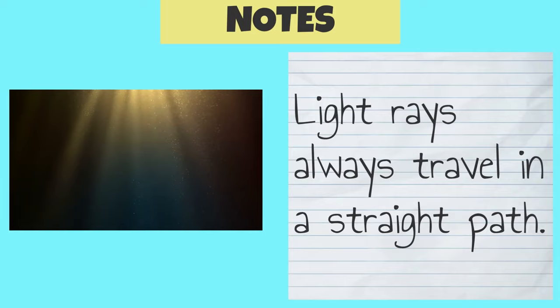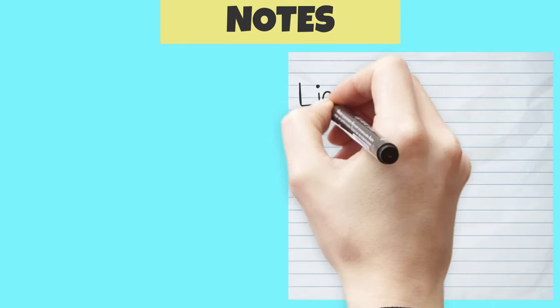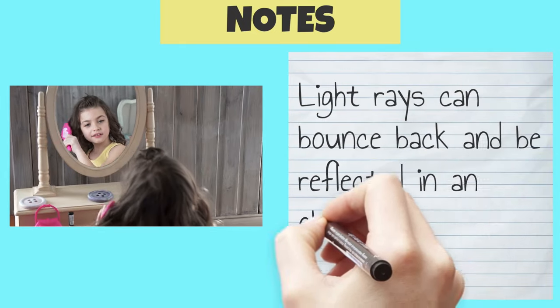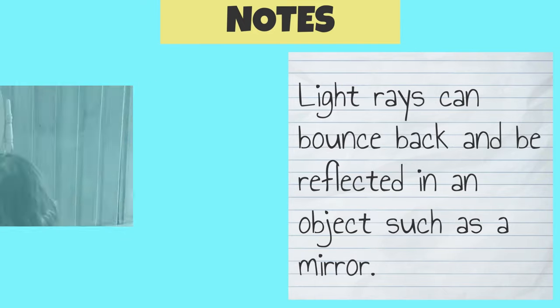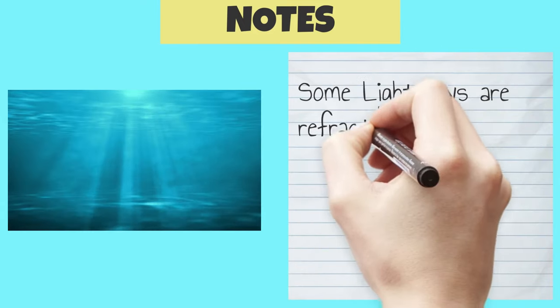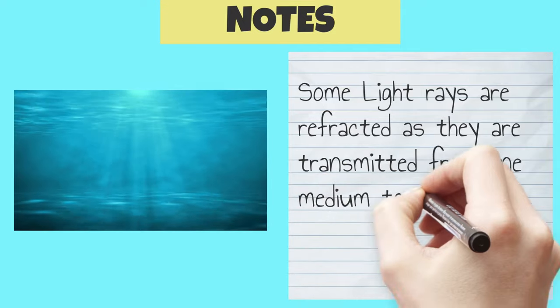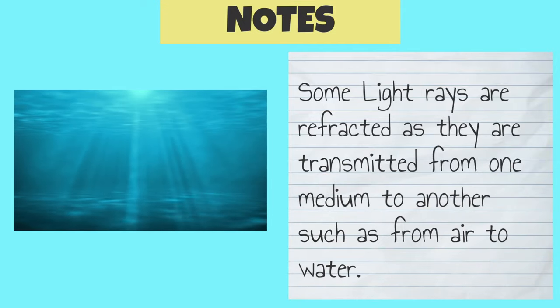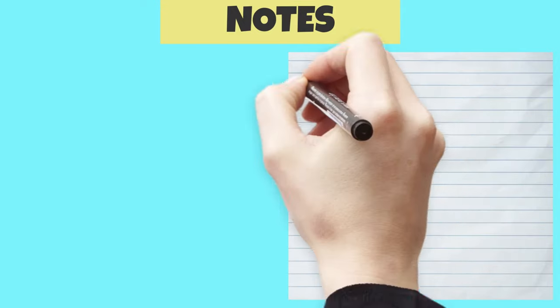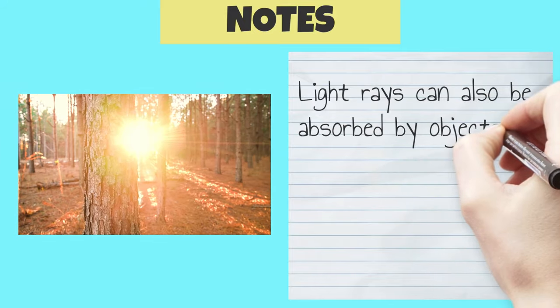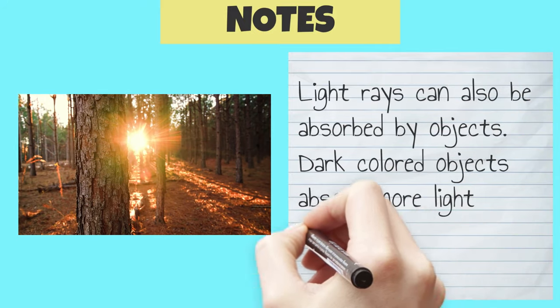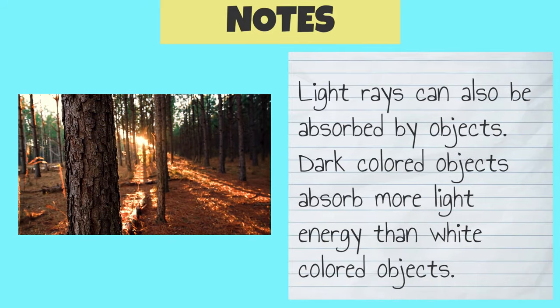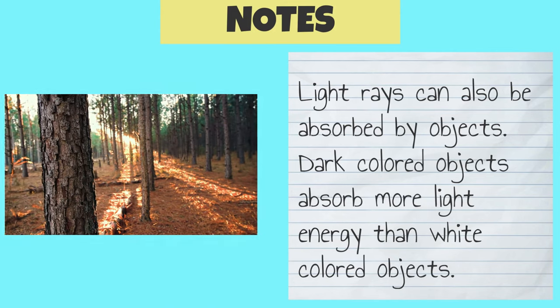Let's review what we just learned. Light rays always travel in a straight path. Light rays can bounce back and be reflected in an object such as a mirror. Some light rays are refracted as they're transmitted from one medium to another, such as from air to water. Light rays can also be absorbed by objects. Dark colored objects absorb more light energy than white colored objects.